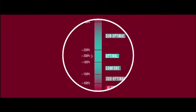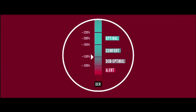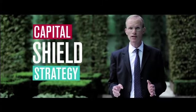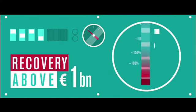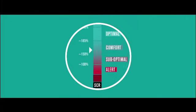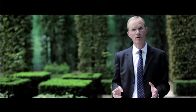SCOR's solvency ratio would fall to 150%, at the edge of the suboptimal range. Thanks to SCOR's robust capital shield strategy, retrocession would kick in automatically and help to restore our solvency position. The recovery we would get in such an extreme situation would be slightly above 1 billion euros, which would mean that our solvency would be brought back into the comfort range. By the end of the year, the group's solvency ratio would have slightly improved through economic value creation, but would still not be in the optimal range.